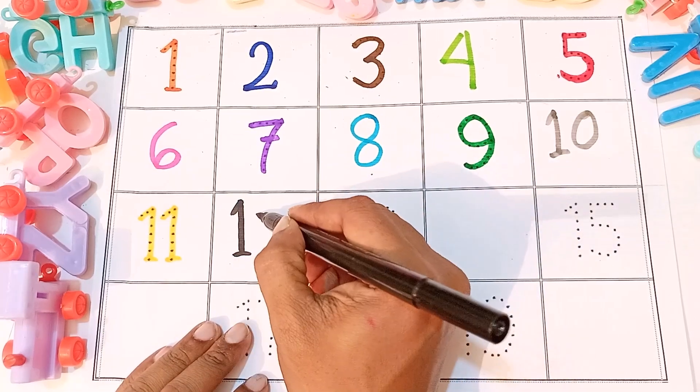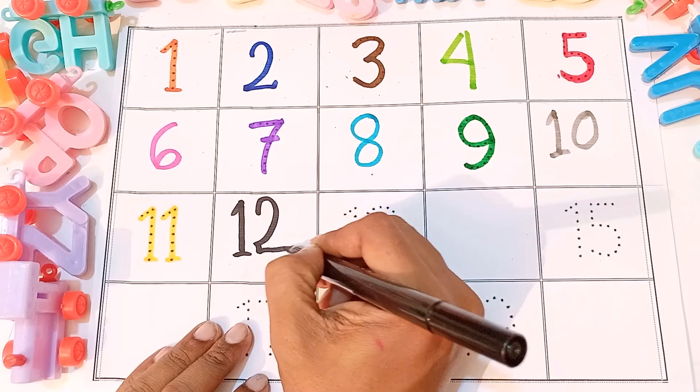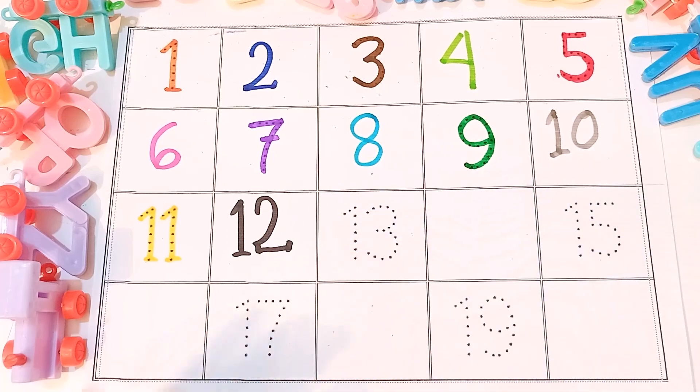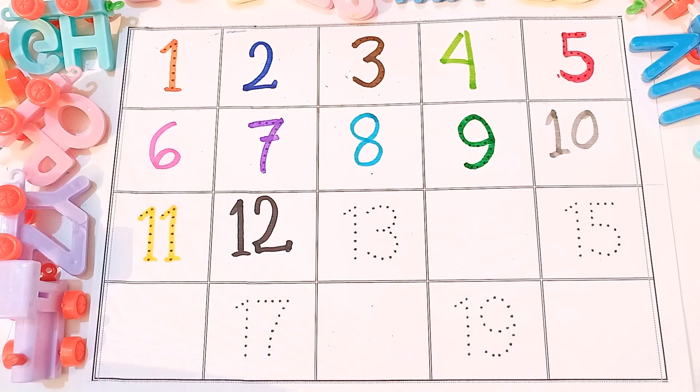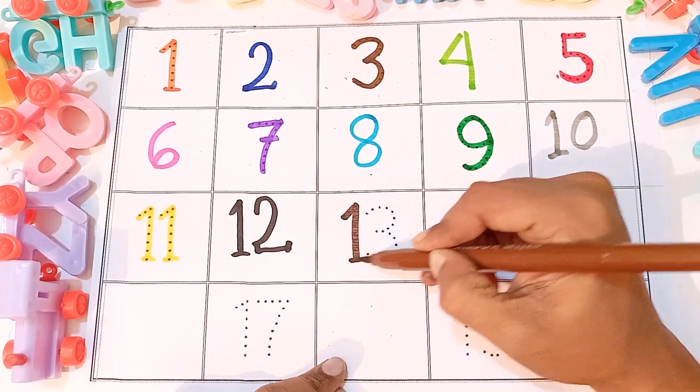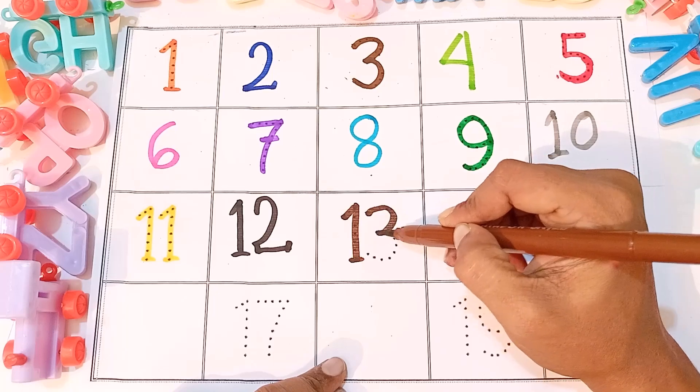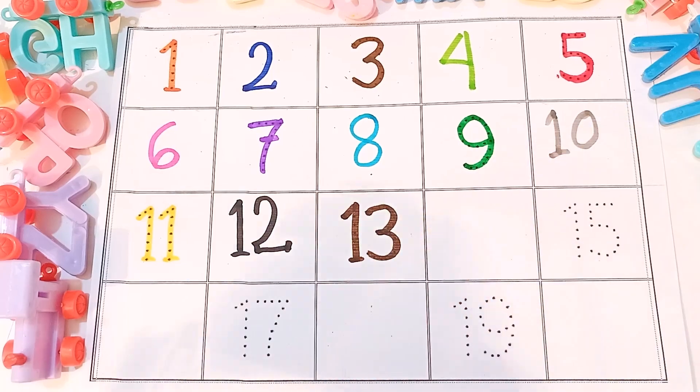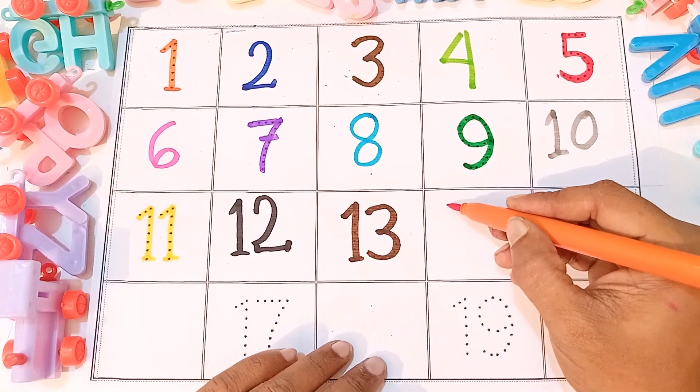Now I am likun ga. Thirteen, one and three, thirteen. Iske bad, fourteen, one and four, fourteen.